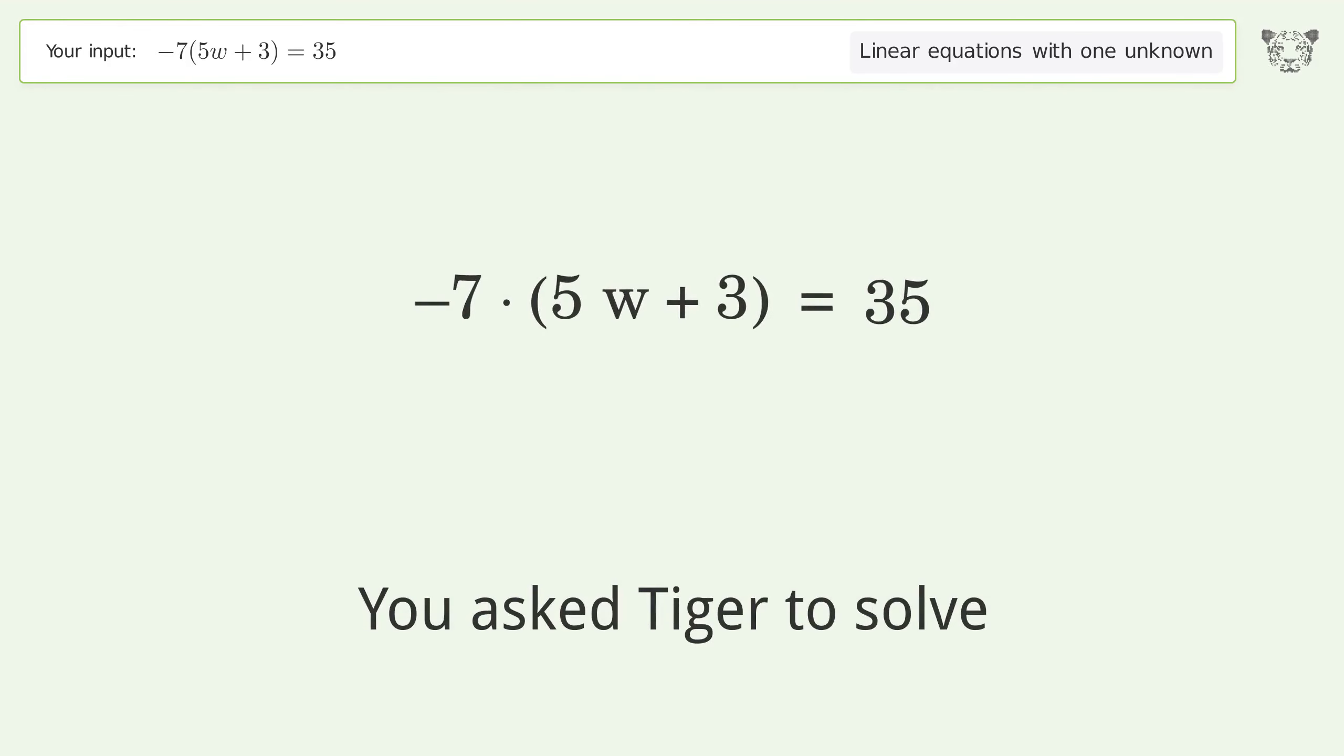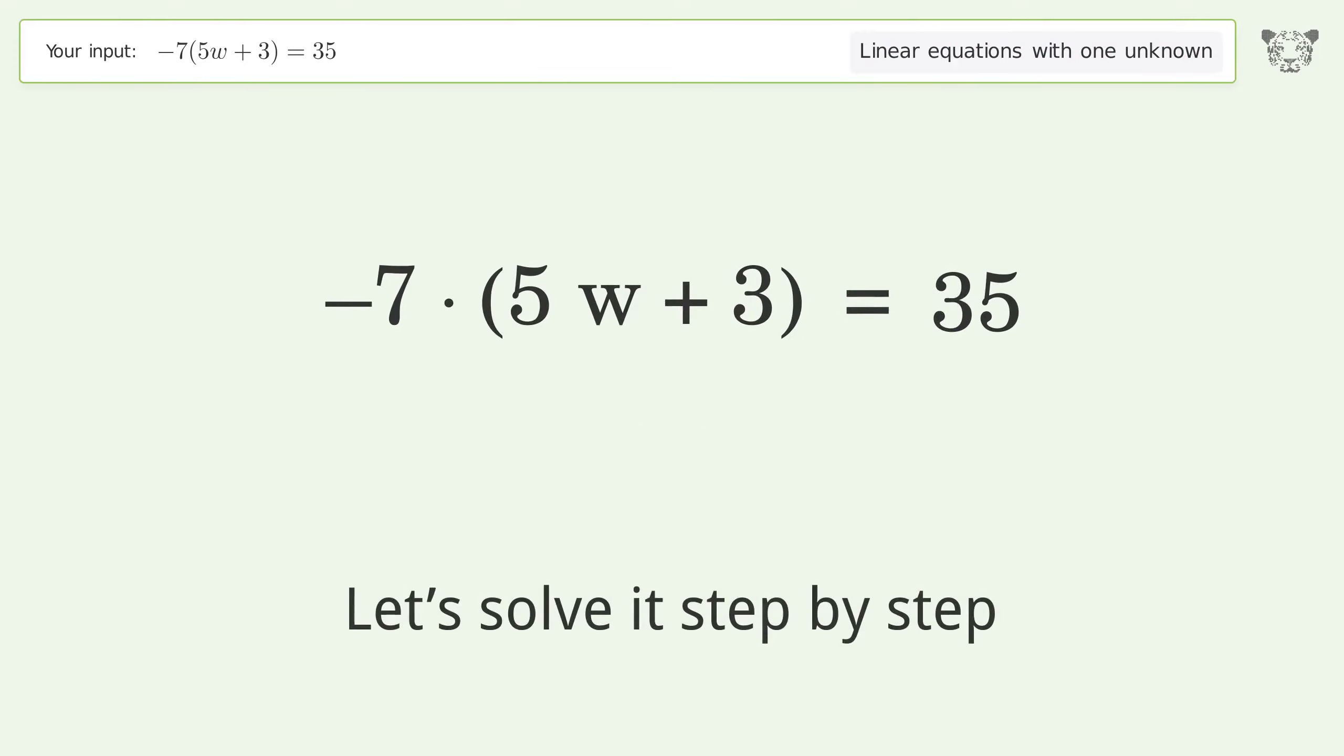You asked to solve this problem which deals with linear equations with one unknown. The final result is w equals negative 8 over 5. Let's solve it step by step.